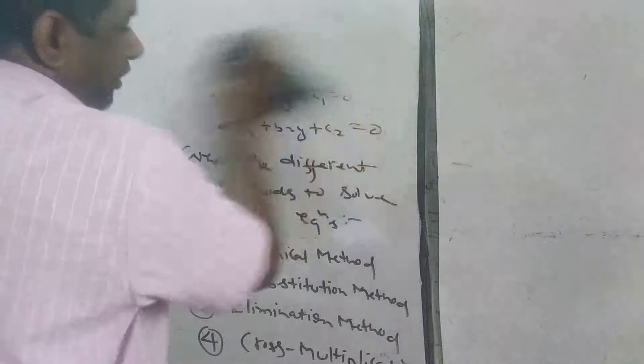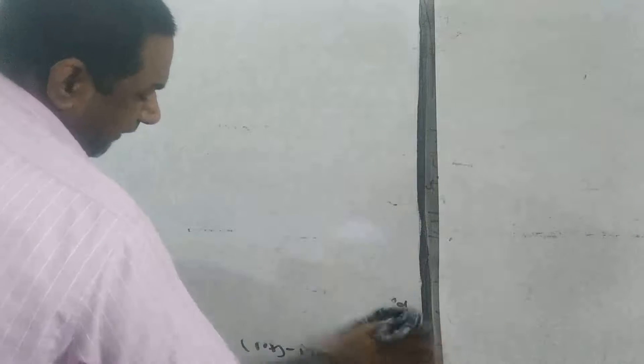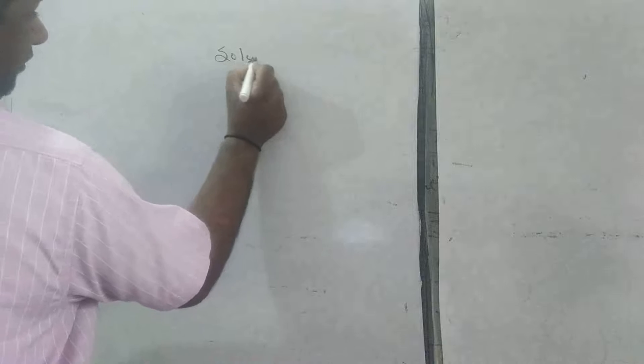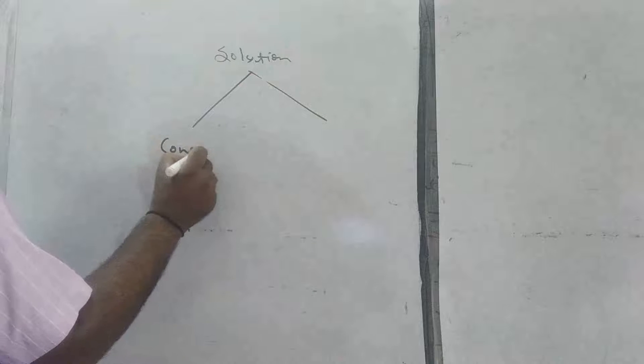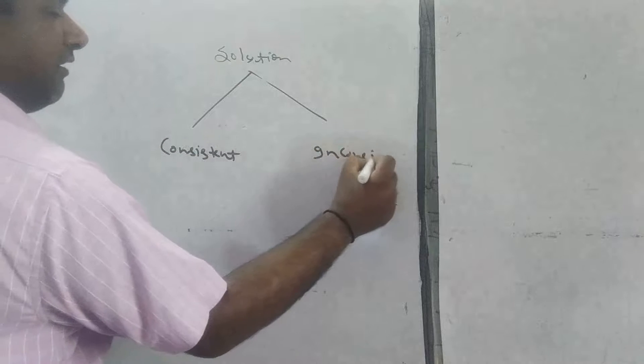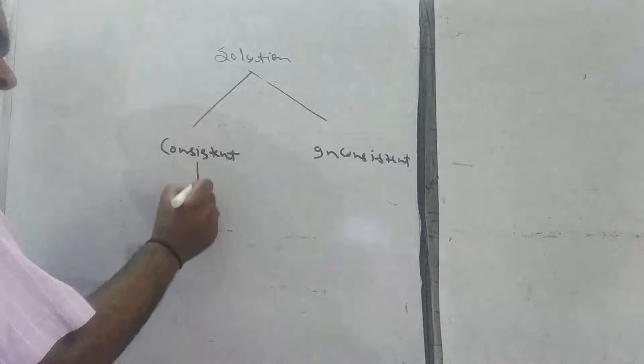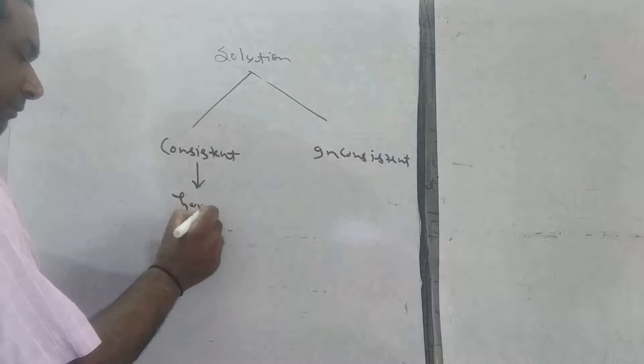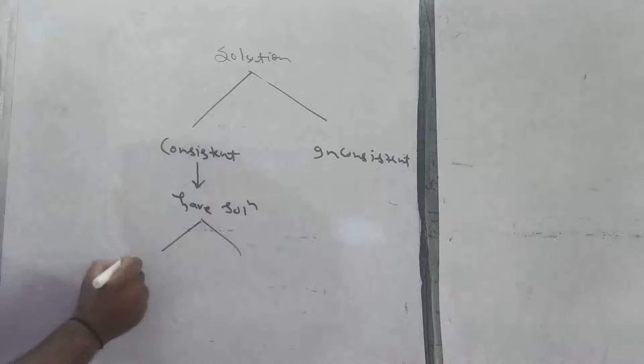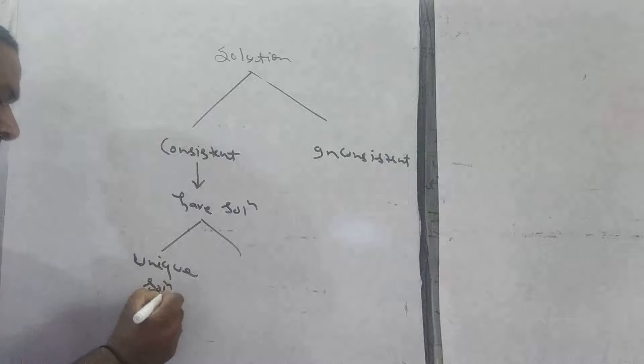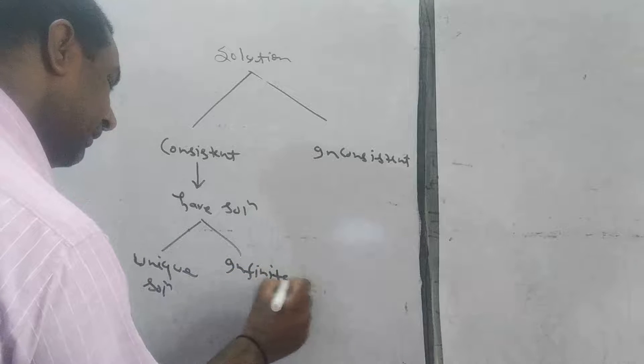Now if I talk about the solution, when we solve the given linear equations, naturally the solution for x and y is obtained. But there are two types of solutions: one is consistent and one is inconsistent. Consistent means have solution, and there are two categories: unique solution and infinitely many solution.